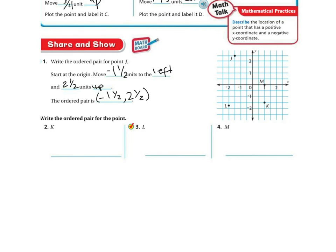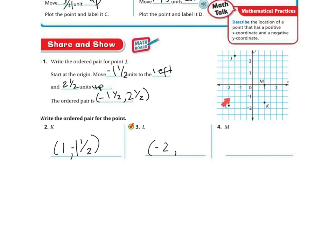Let's write the ordered pair for the rest. For K: I moved over 1 whole and down negative 1 and a half, because it's in between — so it's (1, negative 1½). For L, which is right here: moving over 1, 2 holes to the left, so that's negative 2. Going down, there's 1 whole, but it's actually in between the half and the whole, so it's going to be ¾ — making it negative 1 and ¾.